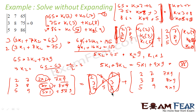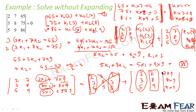In the second determinant, the third column becomes 7·9, 8·9, 9·9, which is proportional to the column 7, 8, 9. So this is also 0. The result is 0 + 0 = 0.